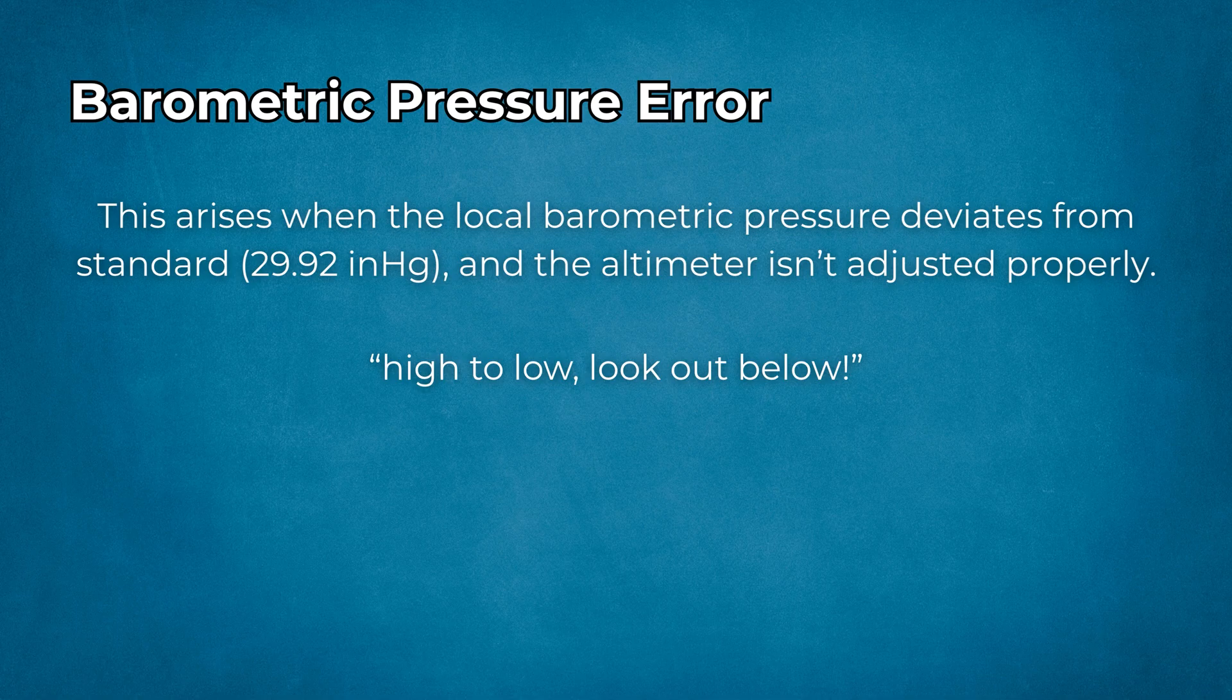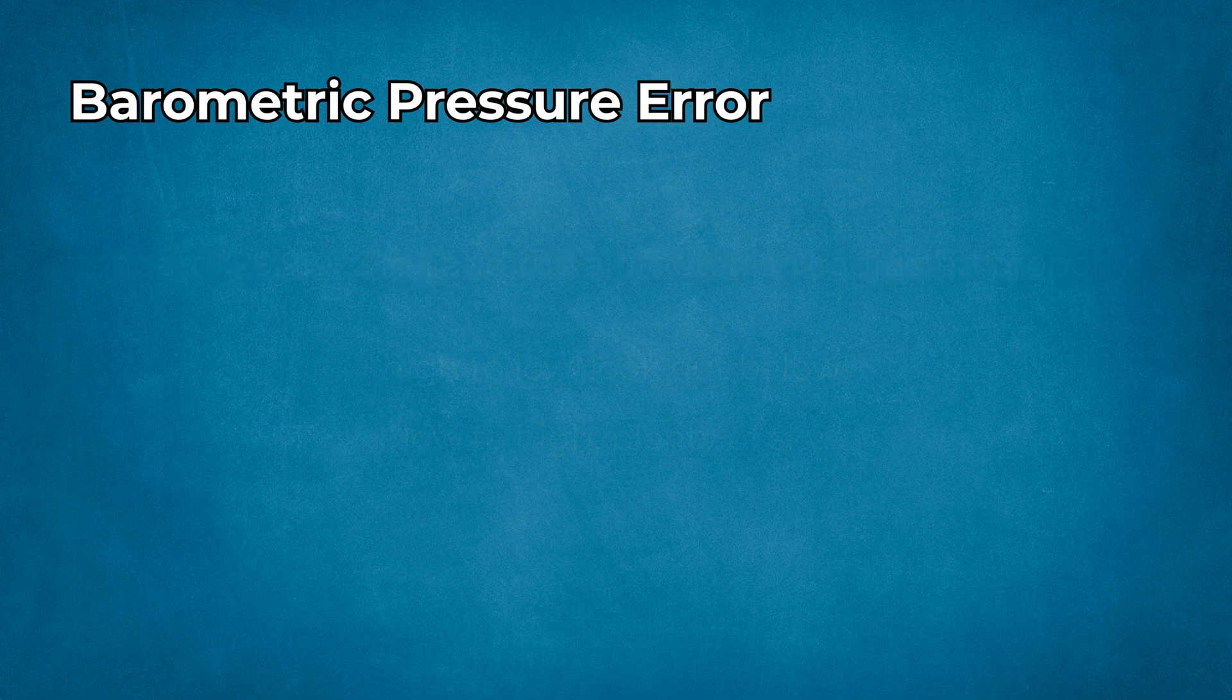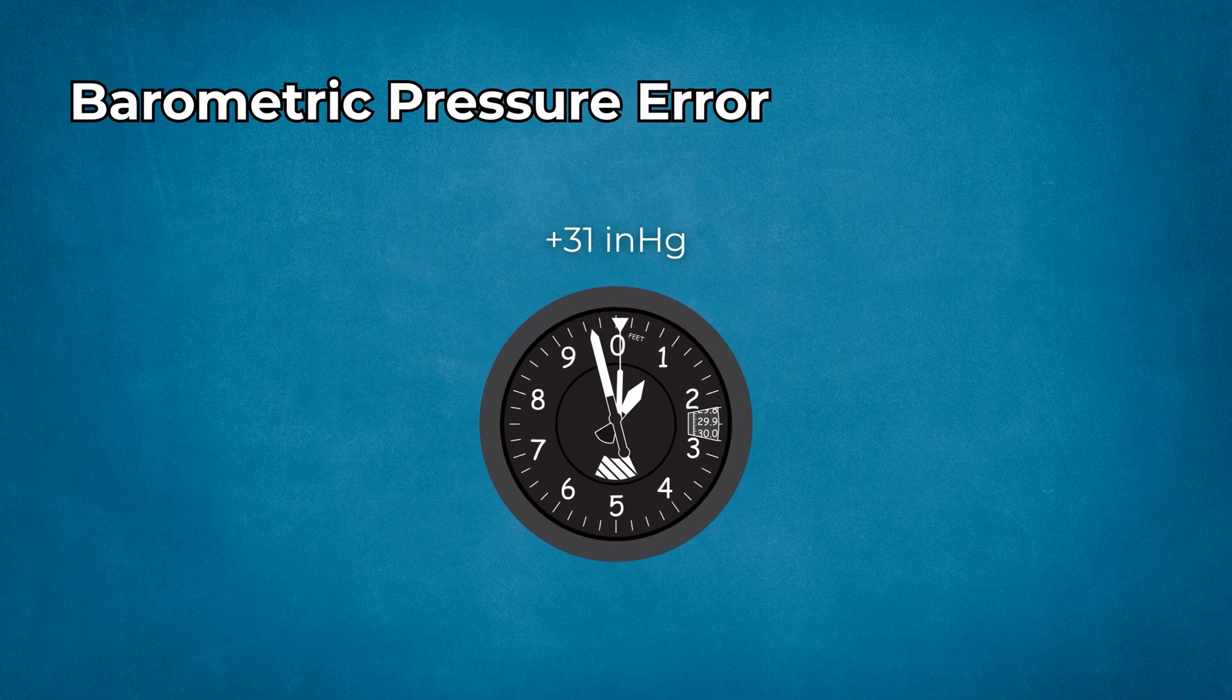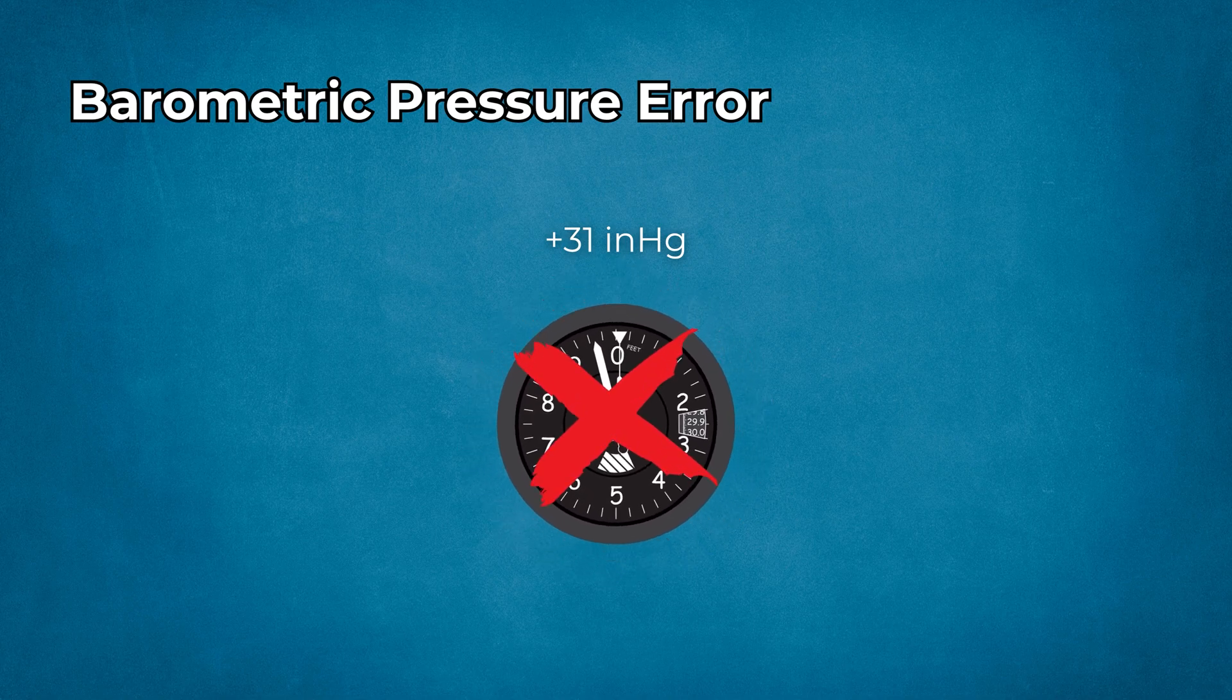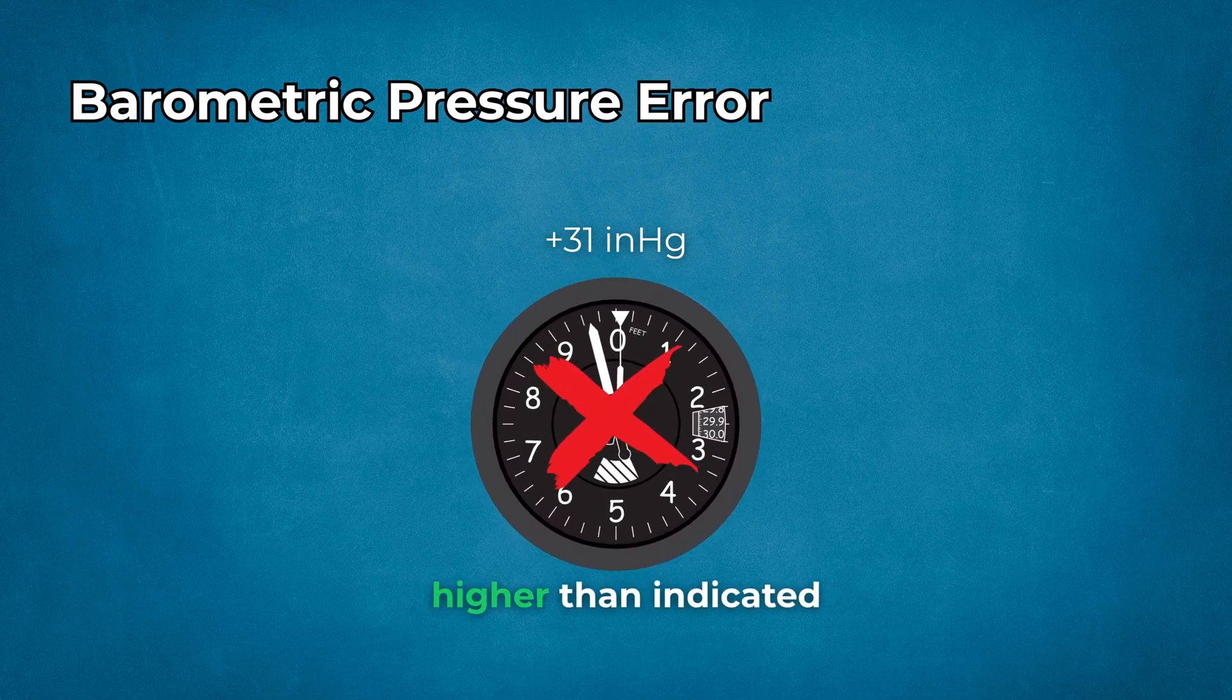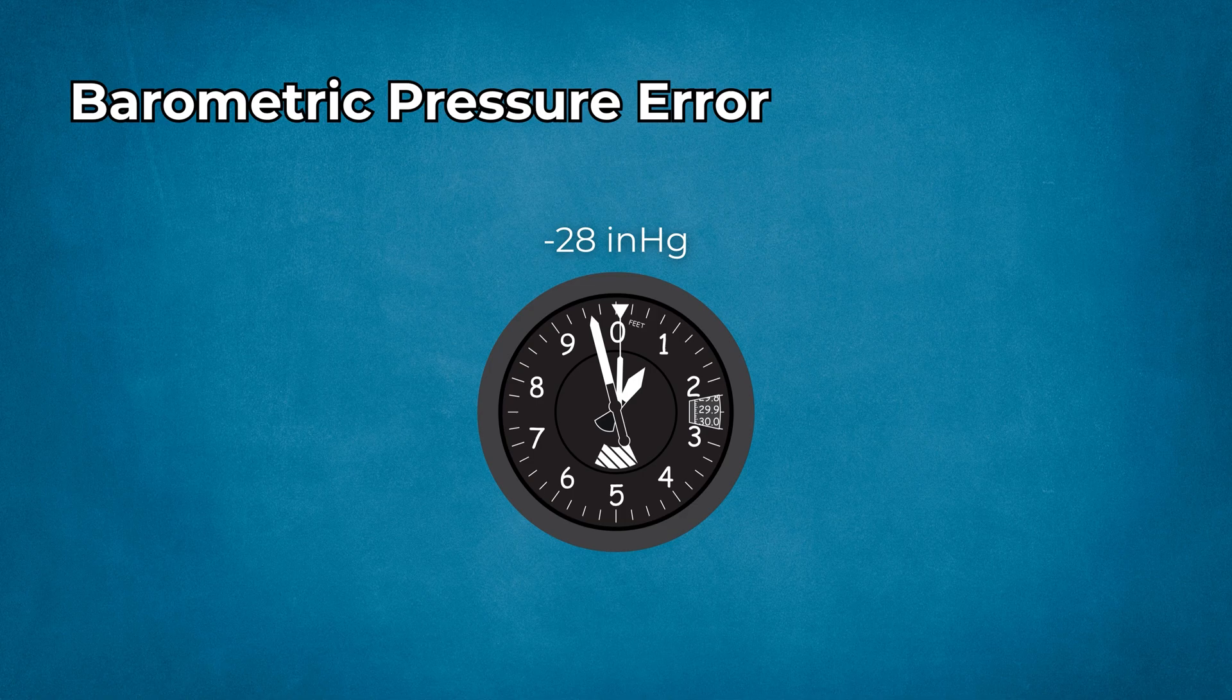Conversely, going low to high, plenty of sky. If pressure is above 31 inches of mercury, many altimeters can't be set high enough, so you're actually higher than indicated. If below 28 inches of mercury, you're lower than what your altimeter shows.